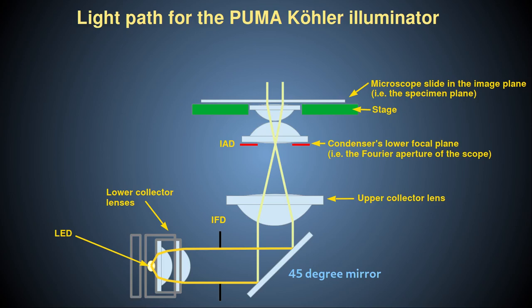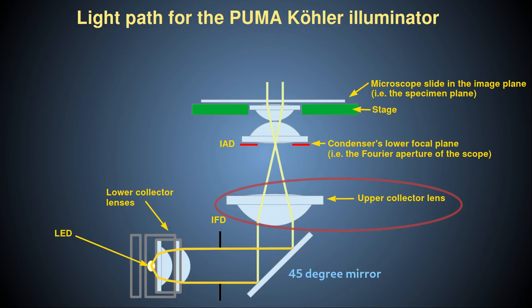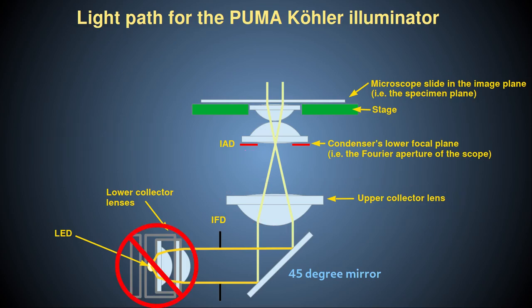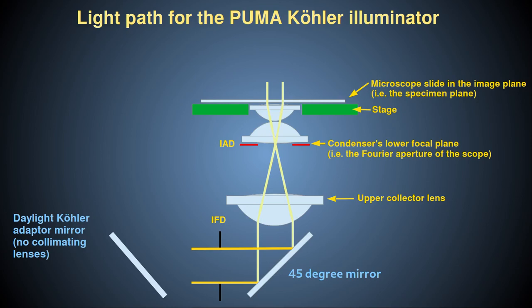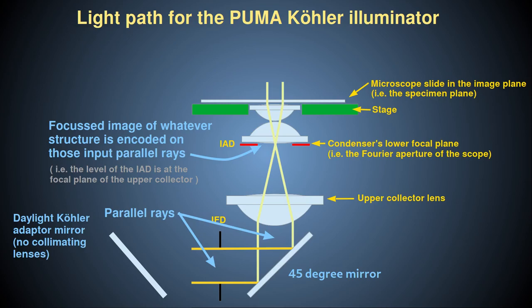The Puma Köhler illuminator is designed with a split collector lens system, where the lower part of the collector is attached to the lamp and is designed to output an approximately collimated plane wavefront beam. And the upper collector lens is designed to focus that collimated beam on the lower focal plane of the condenser to produce a magnified image of the lamp there. With this daylight adapter, you've removed the lower collector lenses with the lamp and replaced them with a mirror. The upper collector is still in place, however. This upper collector does two things. One, together with the condenser lenses, it focuses the image of the field stop onto the specimen plane. And two, on its own, it focuses the incoming parallel rays onto the lower focal plane of the condenser to produce a magnified image of the light source there.